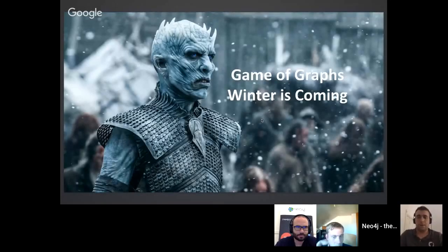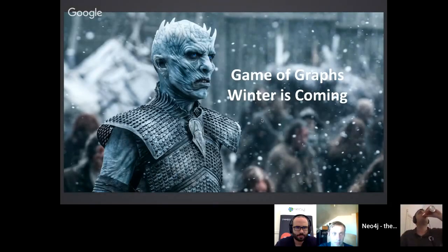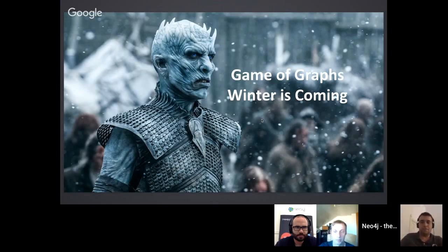Okay, it's on the hour, 6 p.m. in Central Europe and 9 a.m. in the U.S. I hope you had a really great eclipse — total eclipse day yesterday, my friends in the U.S. Really cool to watch this whole live on NASA, and you know, what it's like when the sun stops shining forever, then winter's coming. So welcome to the Game of Graphs online meetup.